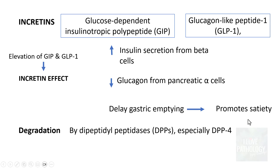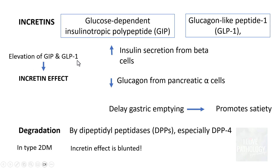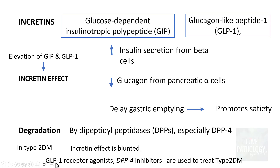Why do we need to understand the incretin effect? In type 2 diabetes mellitus, this incretin effect is blunted — there is no elevation of GIP and GLP-1, so there is decreased insulin secretion and decreased glucagon suppression. This concept is utilized in the treatment of type 2 diabetes mellitus, where GLP-1 receptor agonists and DPP-4 inhibitors are used. DPP-4 inhibitors prevent degradation of incretins, while GLP-1 receptor agonists mimic their action.